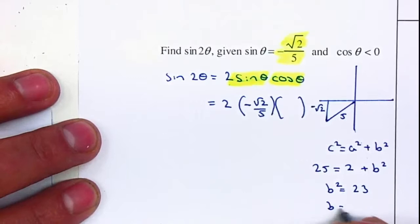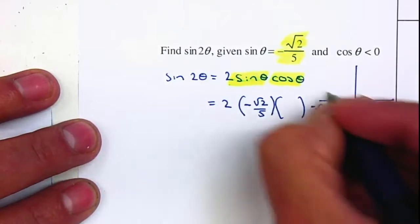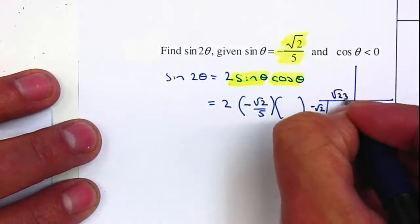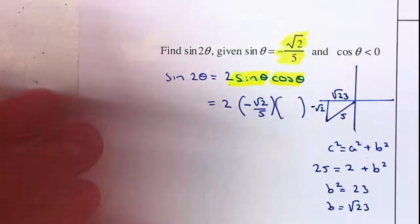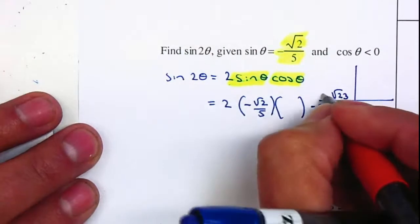So therefore, b equals the square root of 23. But because it's going to the left, that will be negative.